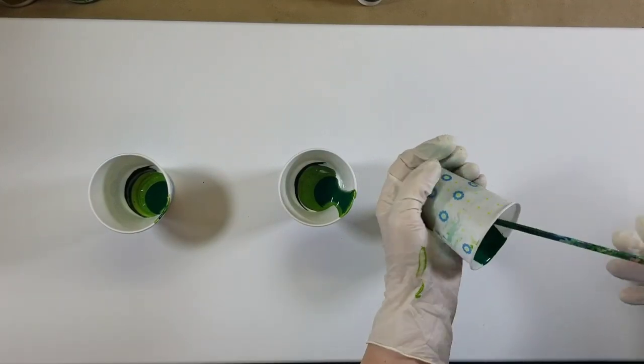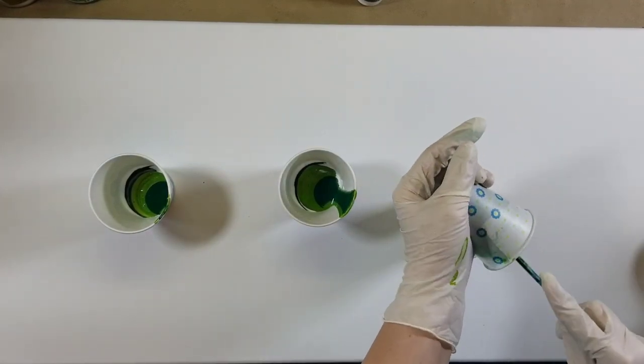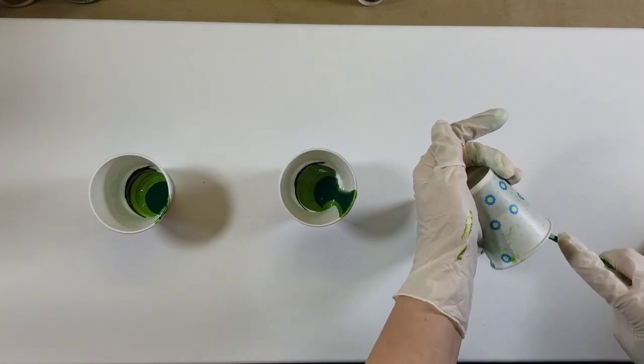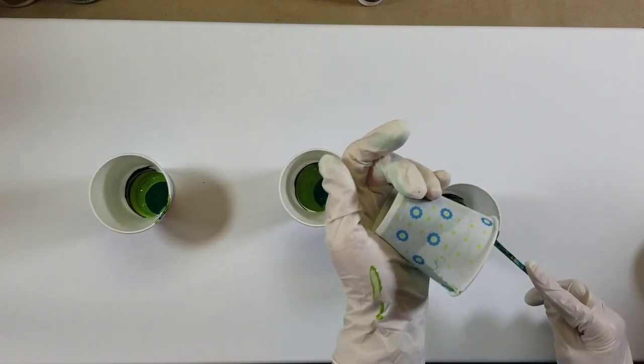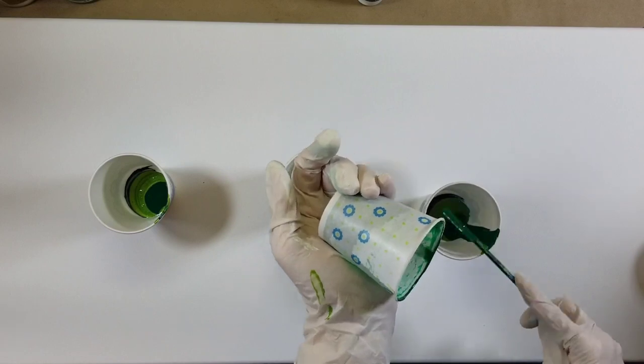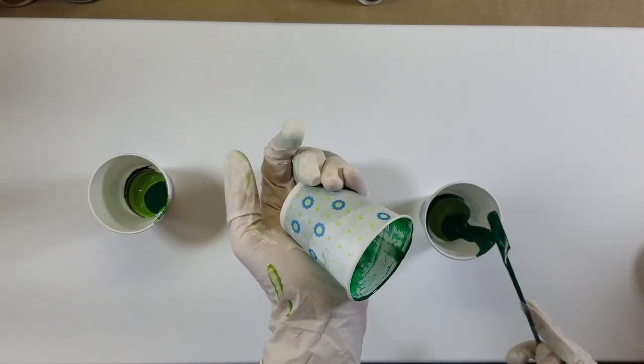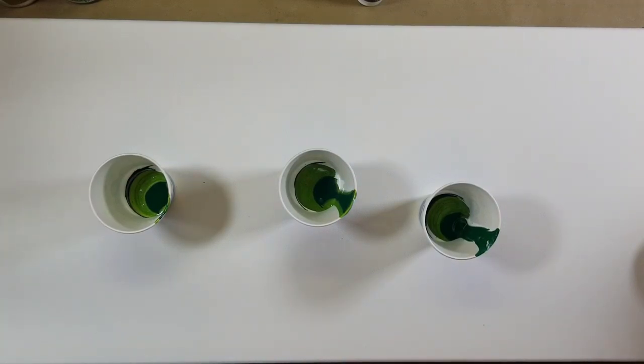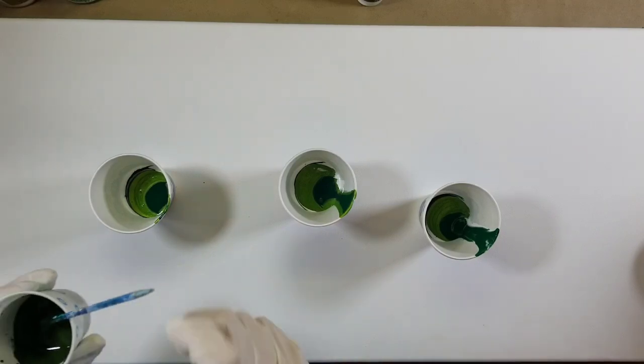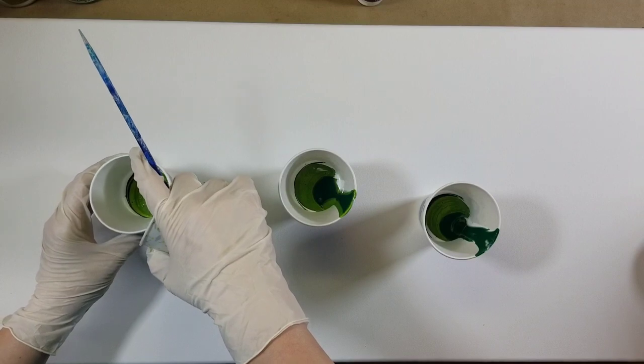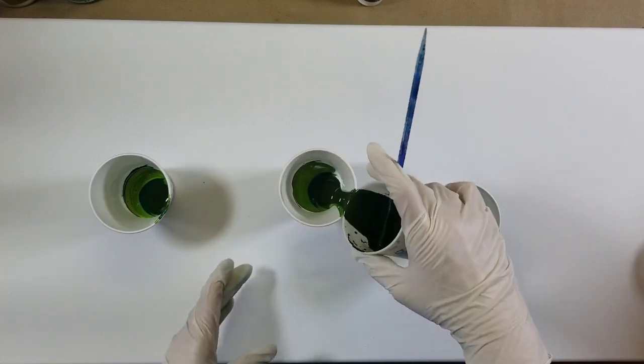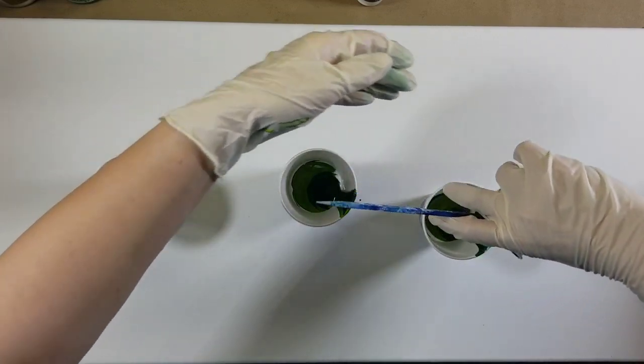I forgot to tell you guys, my pour medium is the Liquitex Professional Pour Medium and I added some GAC 800 to it. Then I just used distilled water to thin it the rest of the way. That's quite unusual for me. I normally use my own pour medium and just add a little bit of the Liquitex.